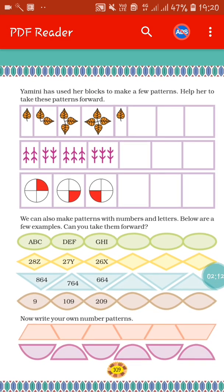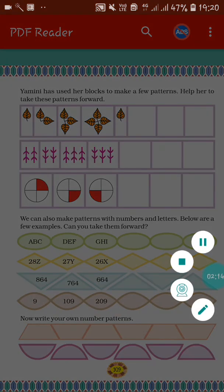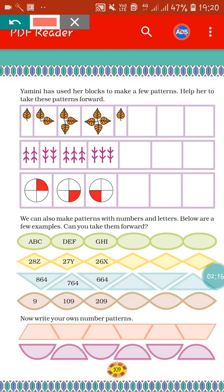We will go to the third page. Here you can see Yamini has used her blocks to make a few patterns. Help her to take these patterns forward. In the first one, you can see there is only one leaf. In the second one, there are two leaves. In the third one, there are three leaves.